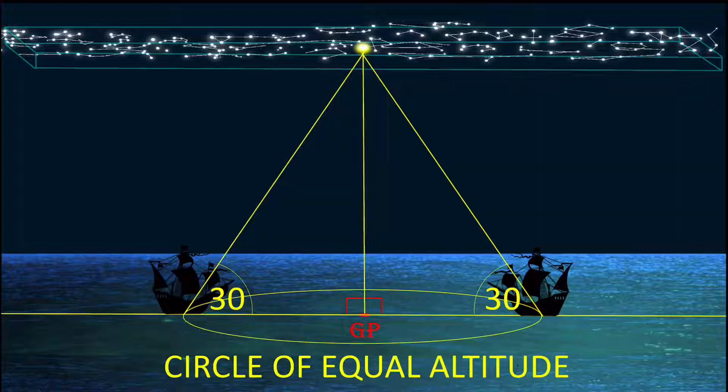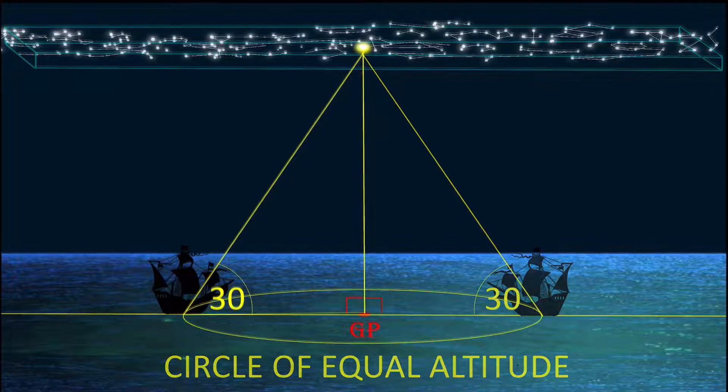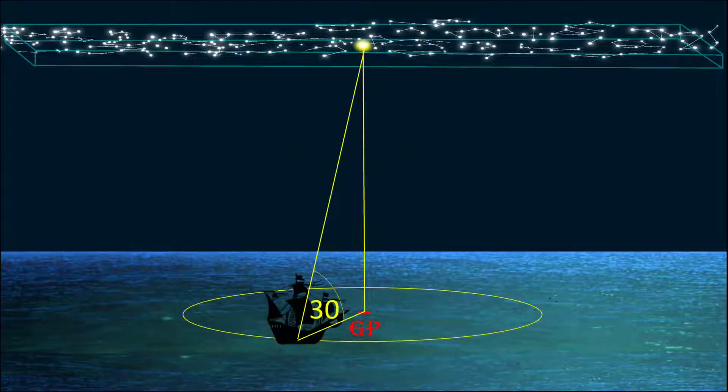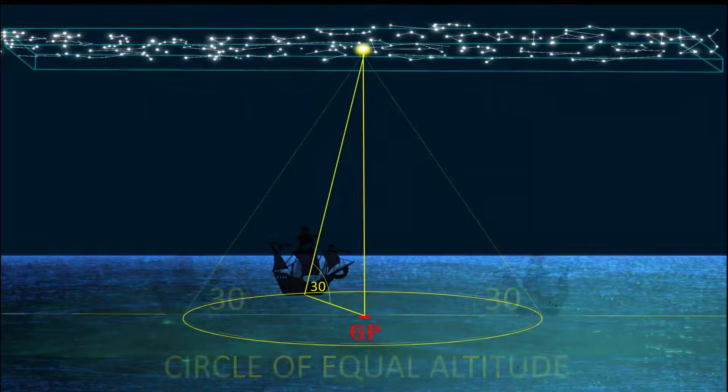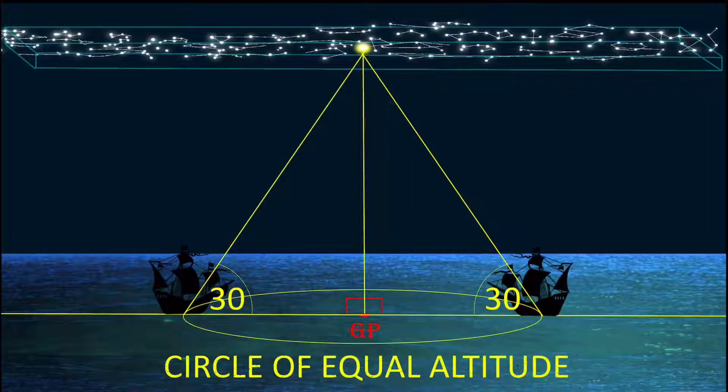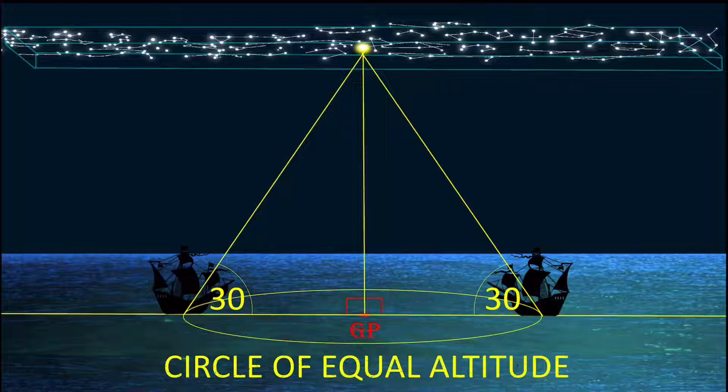Everything on that circle of equal altitude is exactly that, equal altitude. No matter where you are on that circle, you're going to measure 30 degrees. And through being able to measure an angle to that star relative to the horizon, everything on that circle, in between that circle, in the area of that circle, is absolutely flat and level.